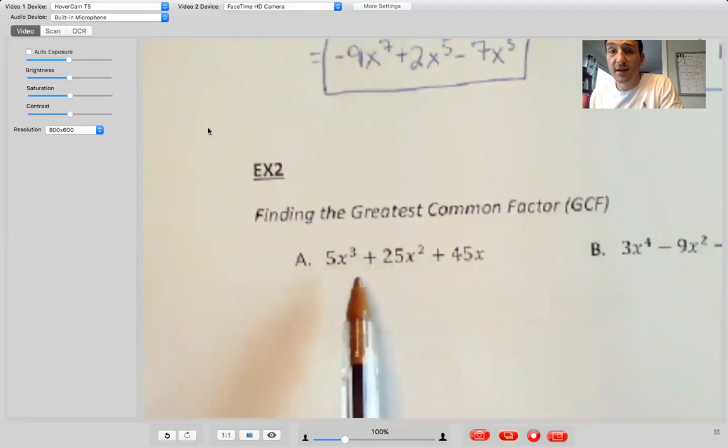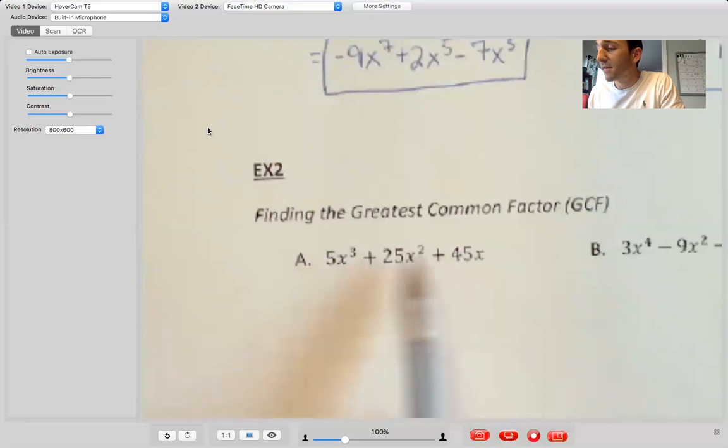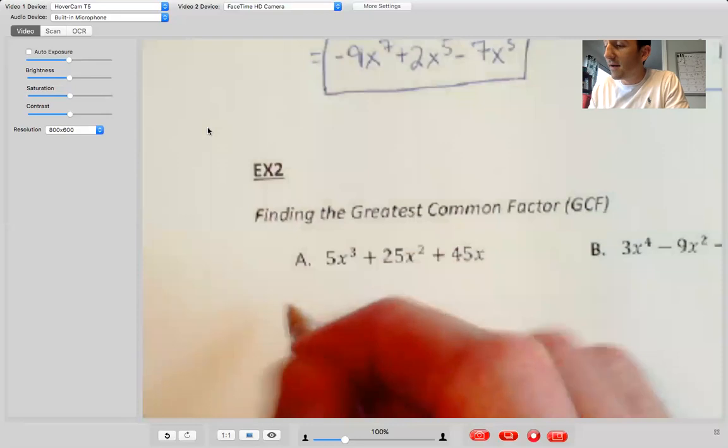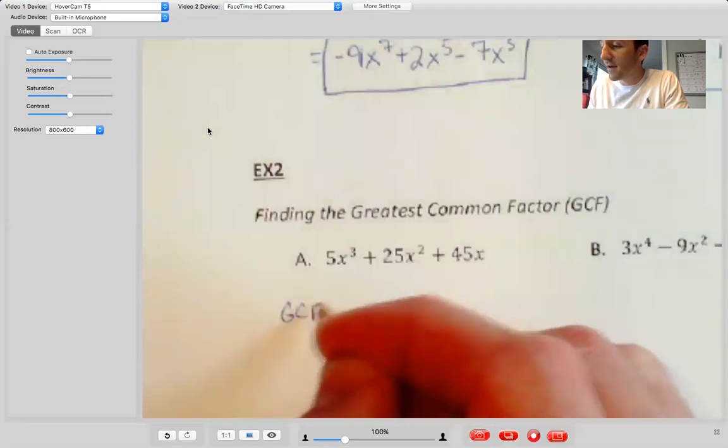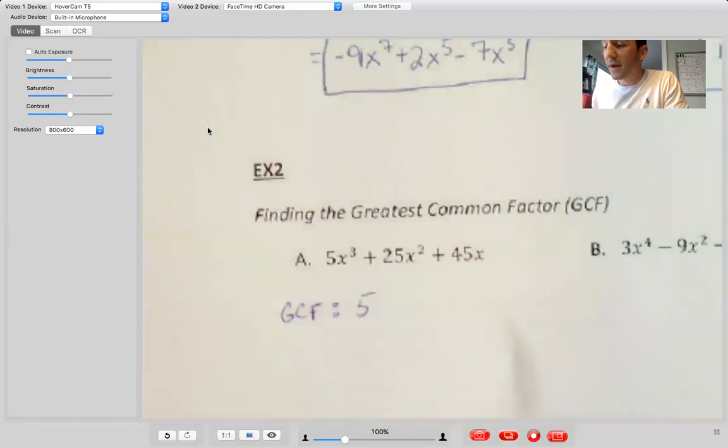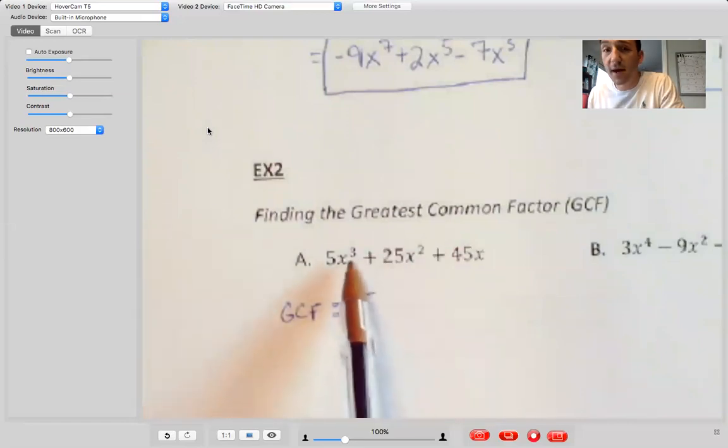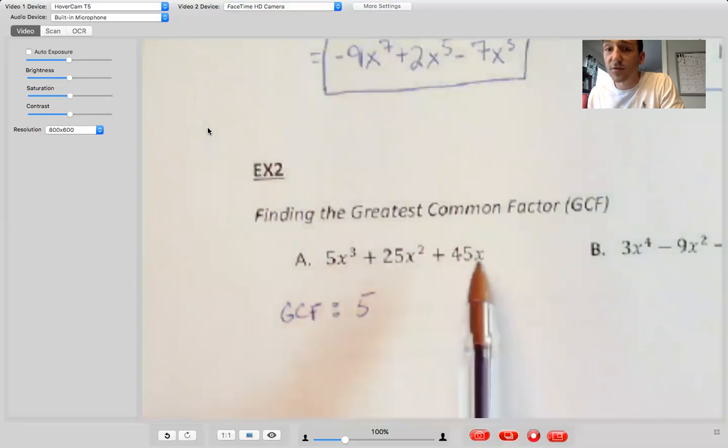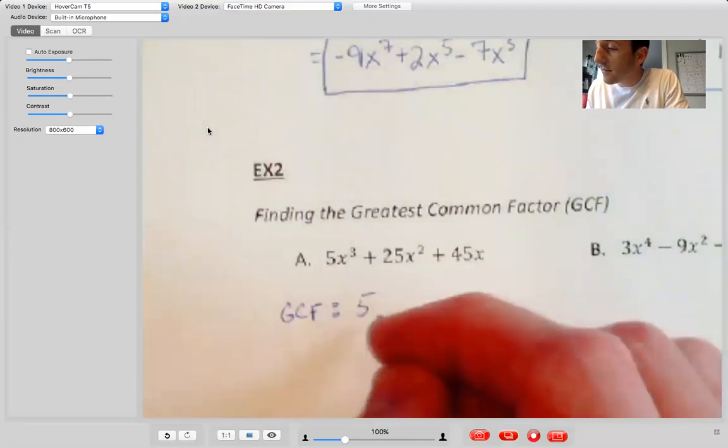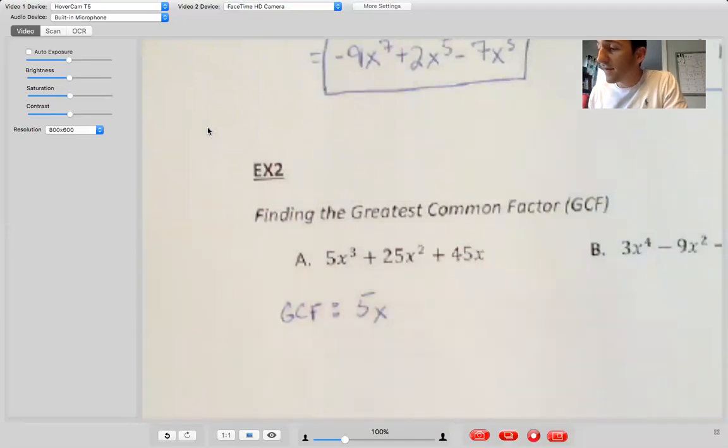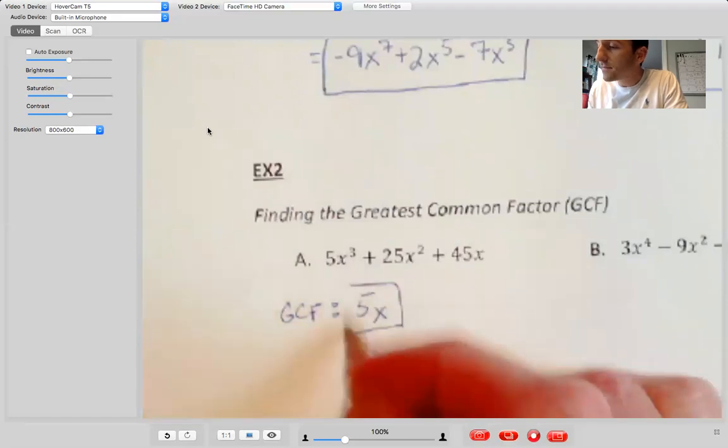So the first part of the process, I think about what's the GCF of the coefficients. So what's the GCF of 5, 25, and 45? Well, that's pretty easy. It is 5. So that's part of my GCF. And then how do we know what the GCF of your variables is? Well, you see, they're all some power of x. So if that's the case, then you just choose the smallest power of x. In this case, that's x to the first. So the biggest factor that goes into all of them is 5x.